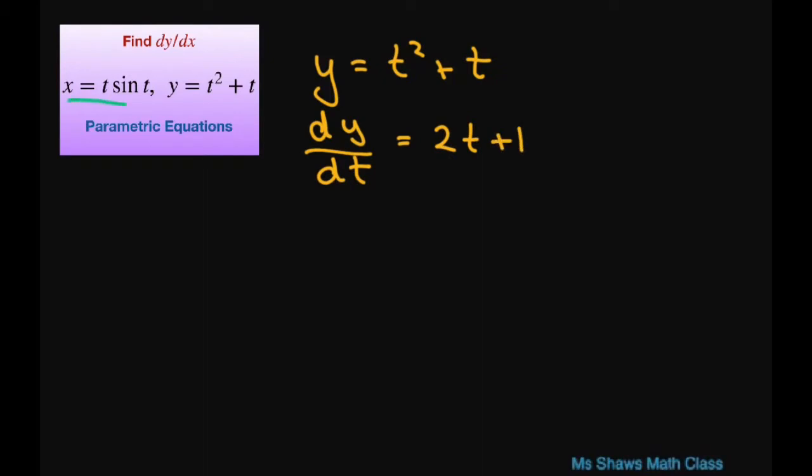For our x we're doing the derivative of x with respect to t. And our x is t sine of t. So using your product rule that's going to be t times cosine of t plus sine of t.